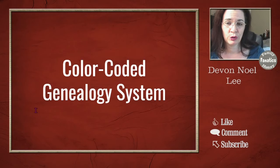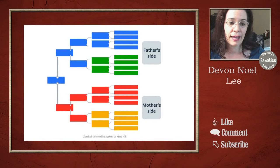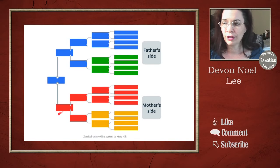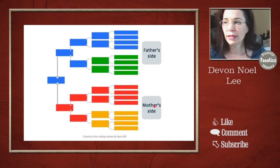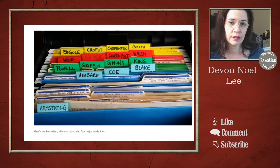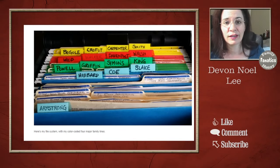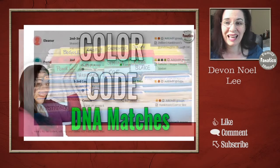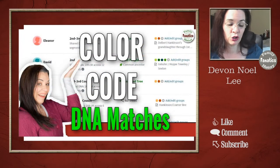Another system that many genealogists use is the color-coded generational system. You have a pedigree chart with yourself, and your surname is a certain color going up the tree. Then when you have the branching of your father's surname, you have another color. There's your mother's surname all the way back and then the branch for the mother's mother's surname line. So it's a four-generation color coding system and you can organize your files this way. An added advantage is that you can apply this color coding system to your DNA matches so that your record matches and your DNA matches can line up.